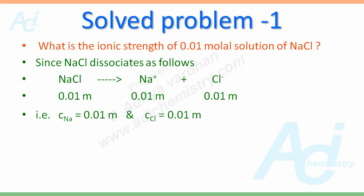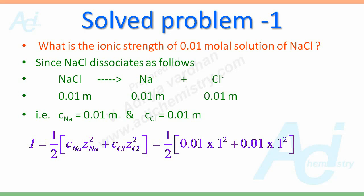Now in order to calculate the ionic strength, we need this equation: I equals half into CNaZNa square plus CClZCl square, where CNa is concentration of Na plus ions, that is equal to 0.01 and CCl is the concentration of chloride ions, this is also equal to 0.01 molal. We know the charges on Na plus and Cl minus are equal to plus 1 and minus 1. So just plug in these values: half into 0.01 into 1 square plus 0.01 into 1 square. Here I am taking absolute values of the charges, not plus or minus. So it comes to 0.01.